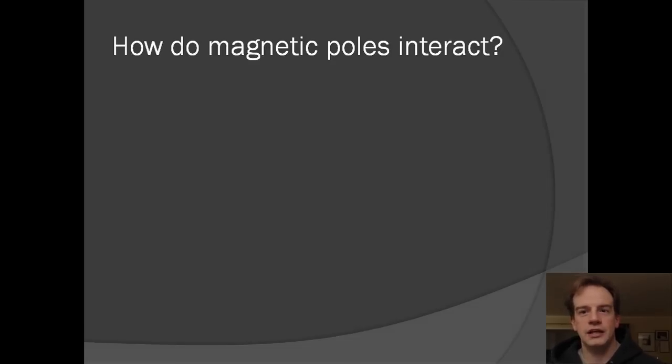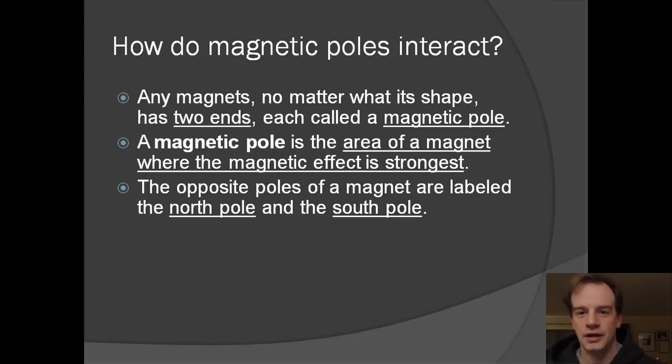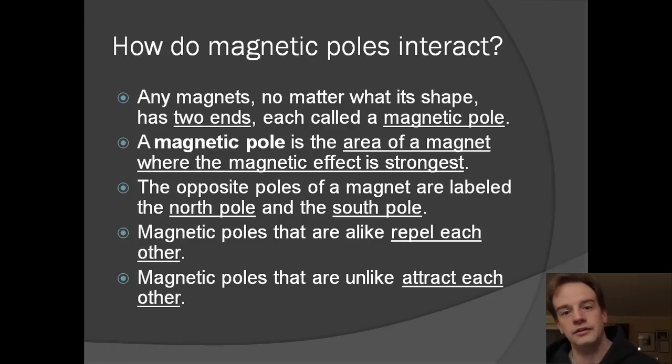How do these magnetic poles interact? Well any magnet, no matter what its shape, has two ends, each called a magnetic pole. A magnetic pole is the area of a magnet where the magnetic effect is the strongest. The opposite poles of a magnet are labeled the north pole and the south pole. Magnetic poles that are alike repel each other and magnetic poles that are unlike attract each other.